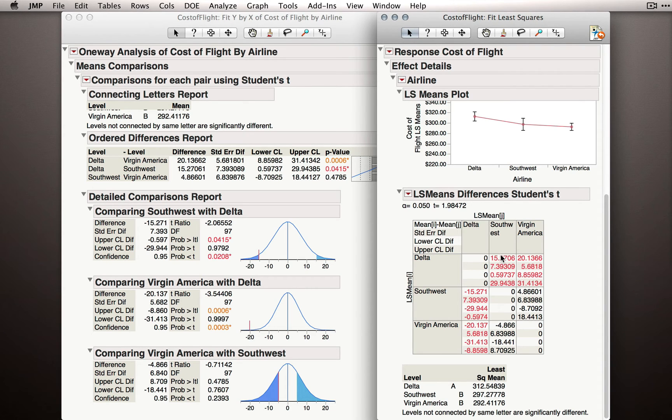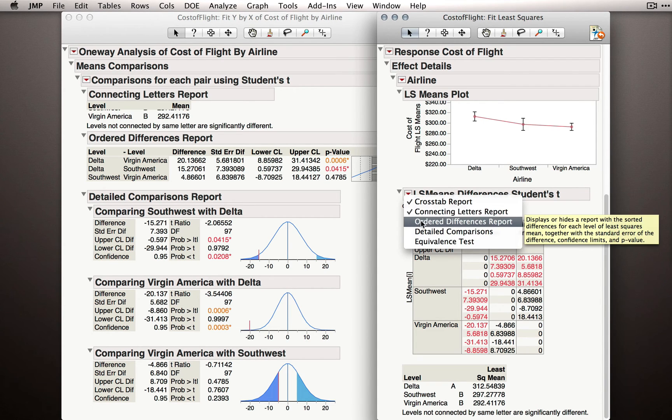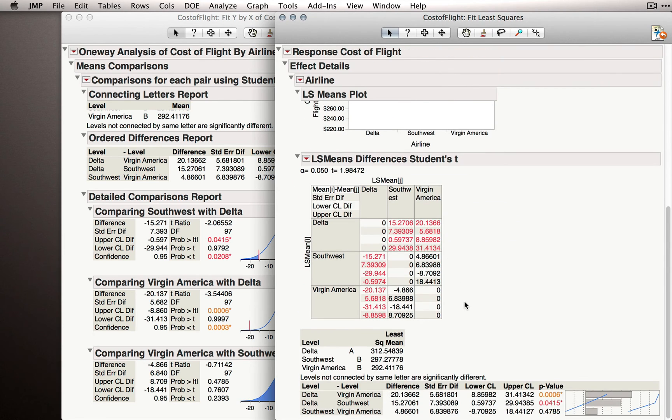Now this table is useful for us, especially when we're looking for the confidence intervals on the differences. But I would recommend, just like I recommended under Fit Y by X, that you go to the red triangle and request either the Ordered Differences Report, which will give us the same Ordered Differences Report we got before.